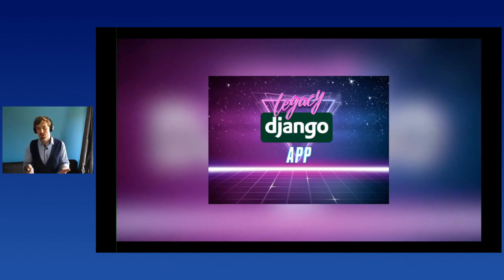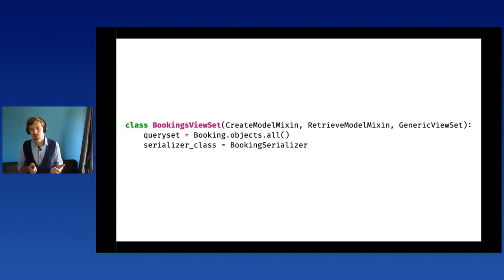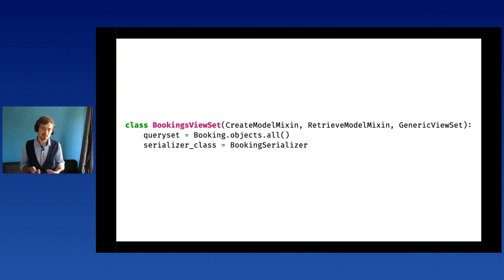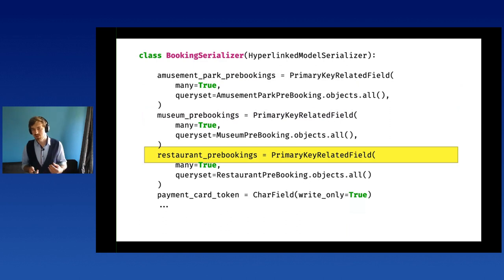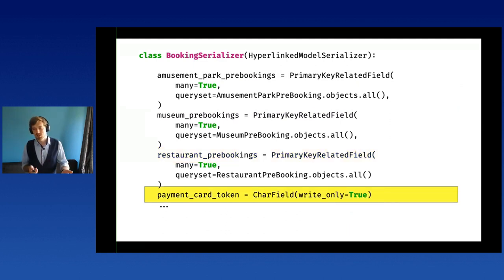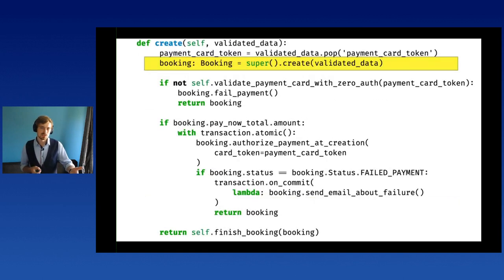For this talk, I prepared an example legacy Django application inspired by a real-world, production codebase — obfuscated of course. The application has some booking logic and is a Django application with Django REST Framework. There is an endpoint where you can book a few things at once: reserve tickets to an amusement park, a museum, or book a table at a restaurant in advance and pay for it — like a checkout process.